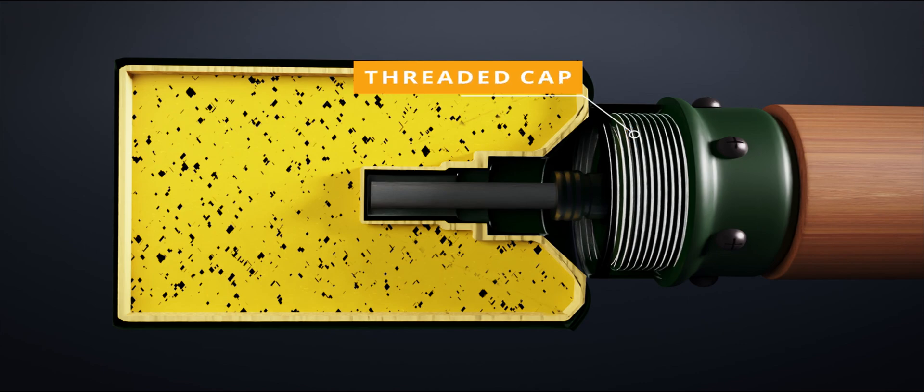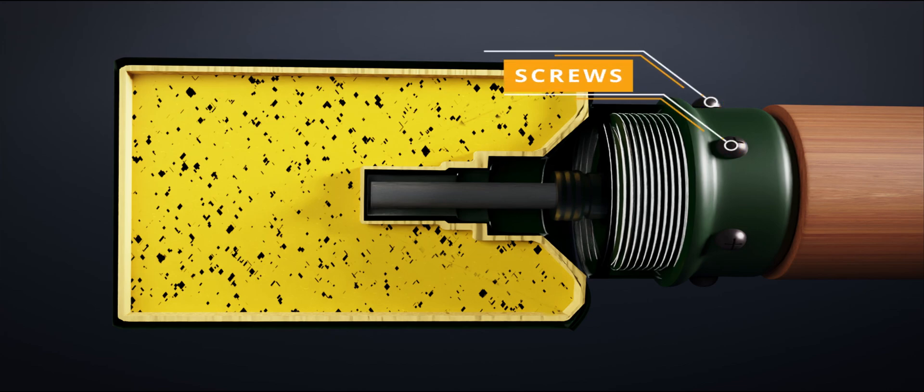The wooden handle has a metal threaded cap on the top. The threaded cap is pressed with the sealing compound to the wooden handle and screws are inserted to hold the threaded cap in place.